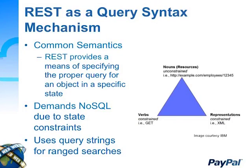Let's talk about REST as a query syntax mechanism. We have a certain number of verbs — constrained HTTP: GET, PUT, UPDATE, etc. We have nouns — the resources being addressed, like employee 12345 at company X. And we have a representation for that, coming back in XML or JSON. This is basically the description of REST we give people today — that particular picture comes courtesy of IBM's training course in REST APIs.